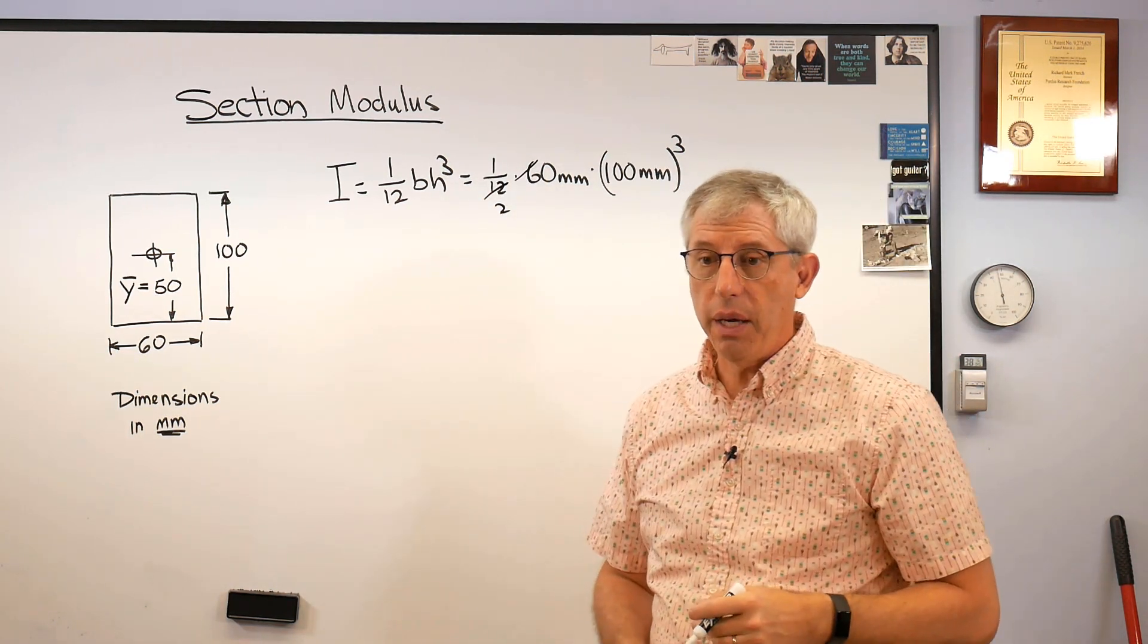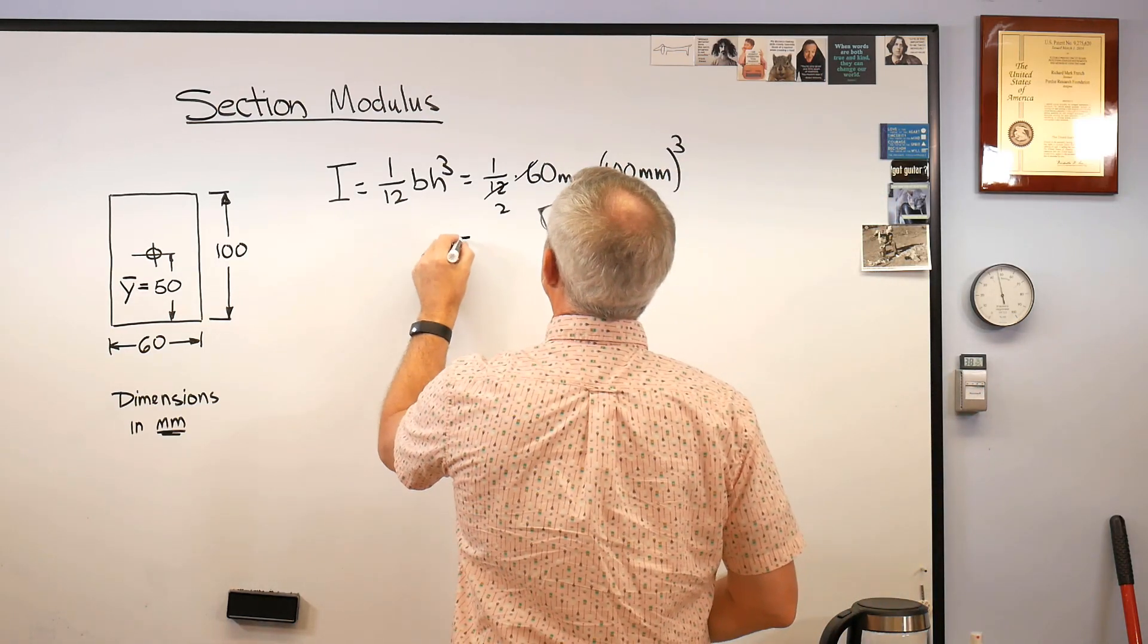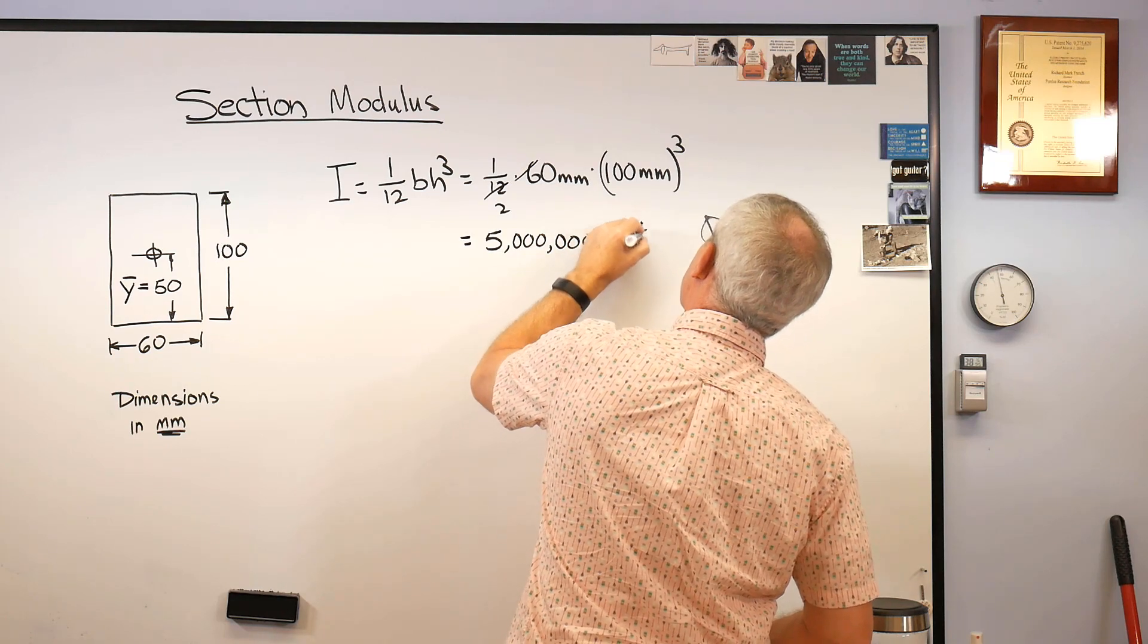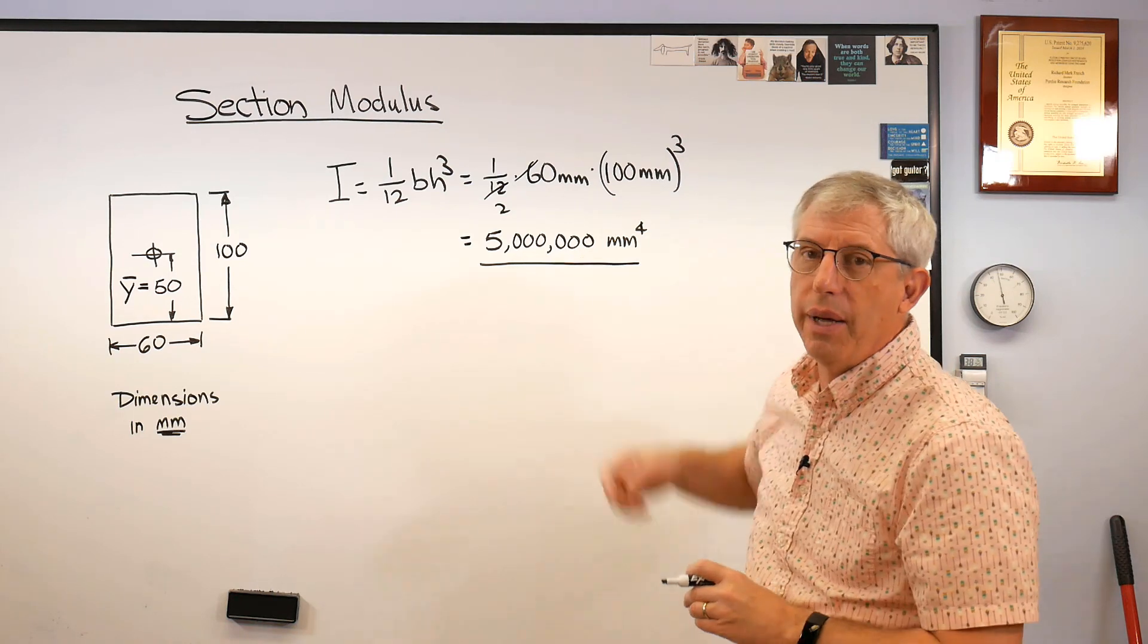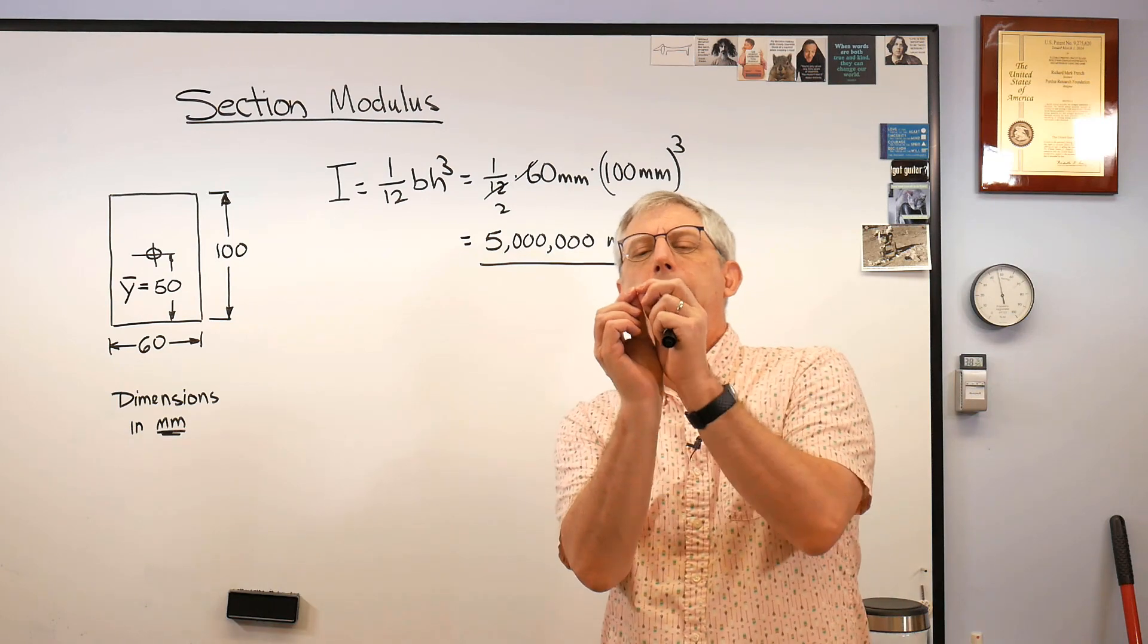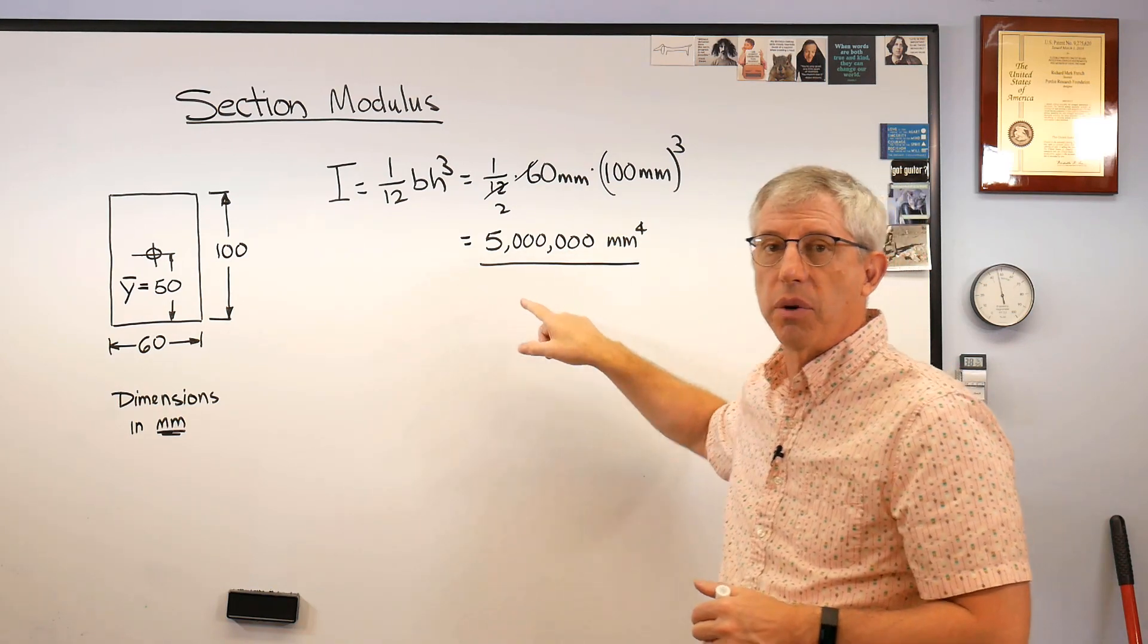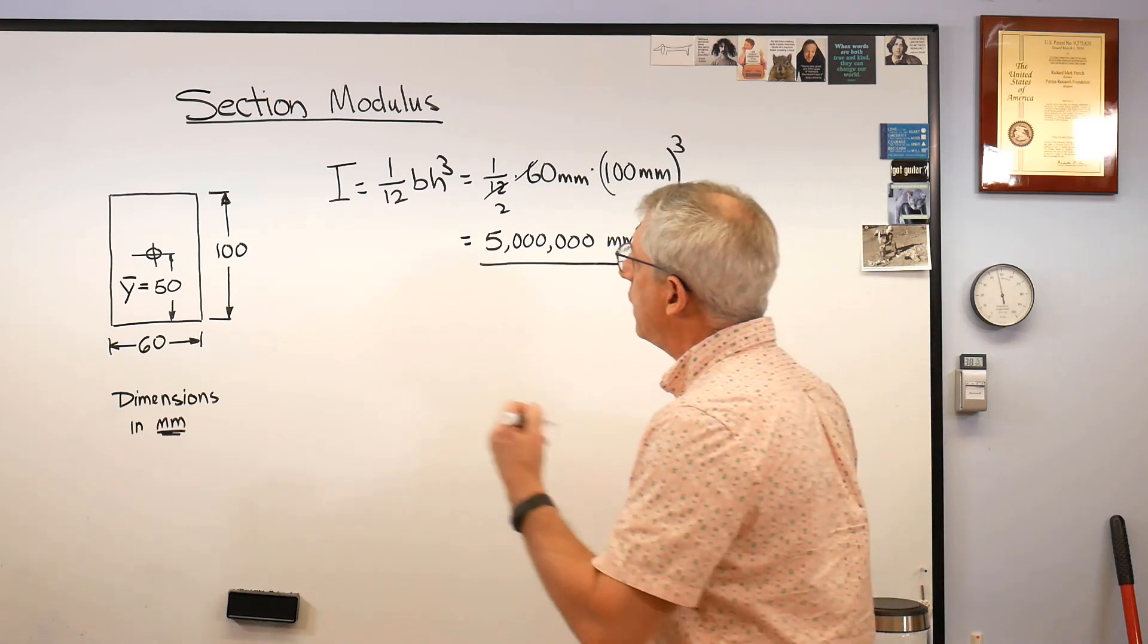So this turns out to be 5 million millimeters to the fourth. Okay, 5 million millimeters to the fourth. Now a really big number, but that's because we're taking a distance to the fourth power and a millimeter is about that big. Well there's an awful lot of square millimeters in that. That's why these numbers get so big. Now if you do this in meters this number comes out microscopic because a meter is this big. So take your pick.